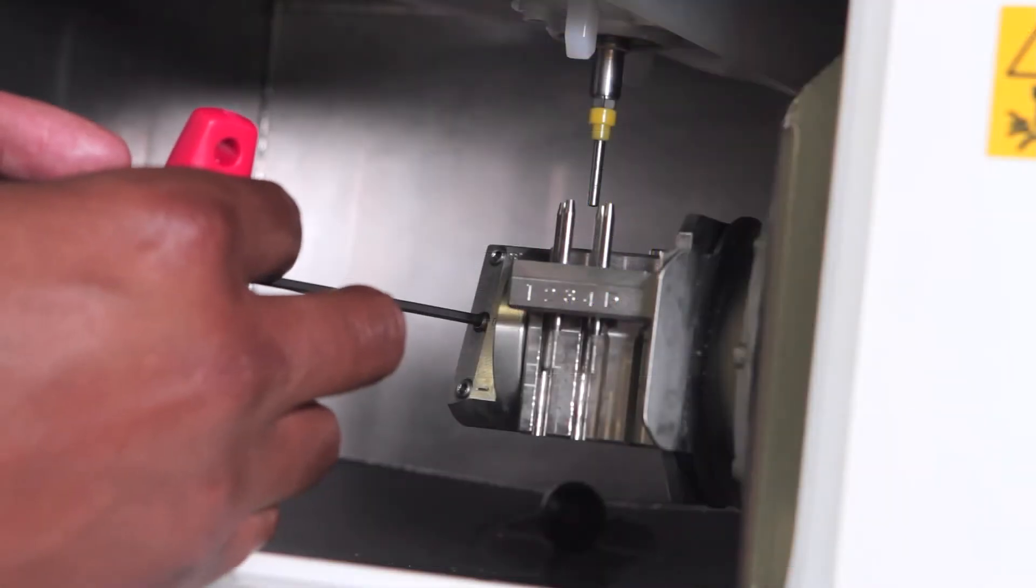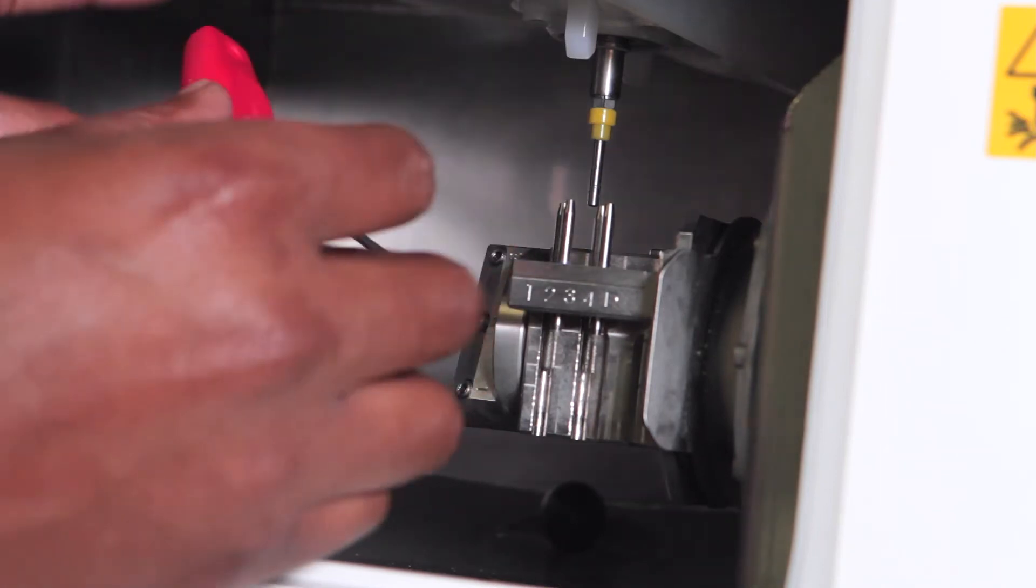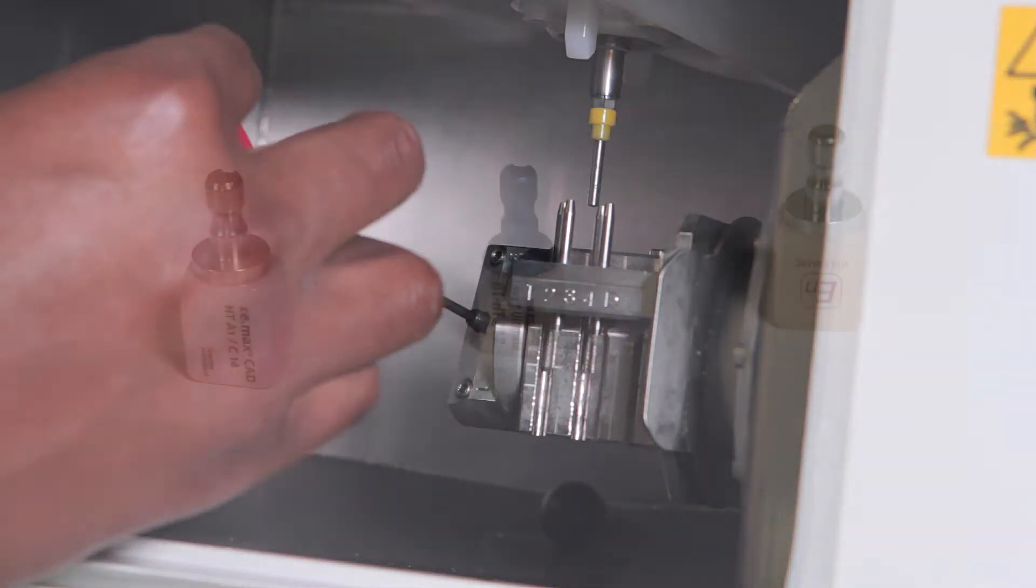To insert a pin type material into the multi-pin clamp, use the included hexagonal screwdriver to loosen the mounting screw in either of the 3-pin slots.